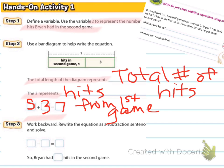Now, what would s need to be so that we can figure out how many hits he got in the second game, which is what we're looking for in our question? So step three says to work backward, rewrite the equation as a subtraction sentence, and solve. So if we were rewriting this as a subtraction sentence, we would do seven minus three, and what is seven minus three? Hopefully you said four. So in the end, we find out that Brian had four hits in the second game.